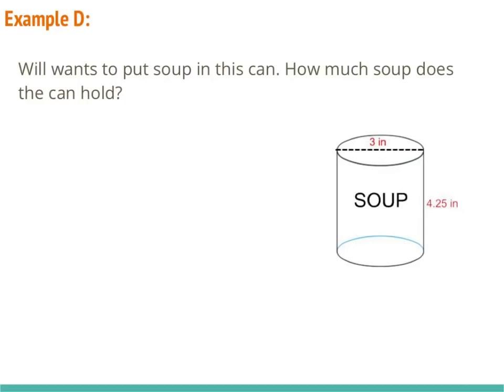In example D, Will now wants to put the soup in this can. So how much soup does the can hold? And this is a volume example. So the volume formula for a cylinder is π r² times height. And earlier we said that the radius is 1.5 inches and our height is 4.25 inches.